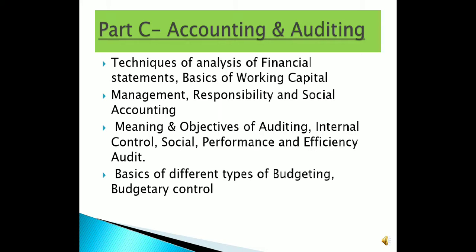The last part is Auditing and Accounting — very easy. Ratio analysis was asked this time. Analysis of financial statements covers: financial statements, ratio analysis, comparative analysis, and common size financial statements. Working capital management basics, responsibility and social accounting, meaning and objectives of auditing, internal control, internal audit and their differences, social performance and efficiency audit, and basics of budgeting — difference between fixed budget and flexible budget was asked in 2016, and budgetary control — all are included.